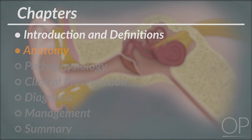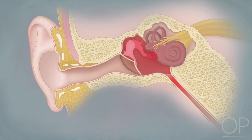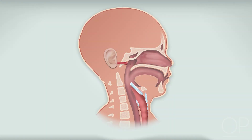Anatomy. The middle ear is the portion of the ear between the tympanic membrane and the oval window of the internal ear. It consists of three ossicles, the tympanic cavity, and the eustachian tube. The eustachian tube connects the tympanic cavity to the nasopharynx and normally functions to ventilate and clear secretions from the middle ear.